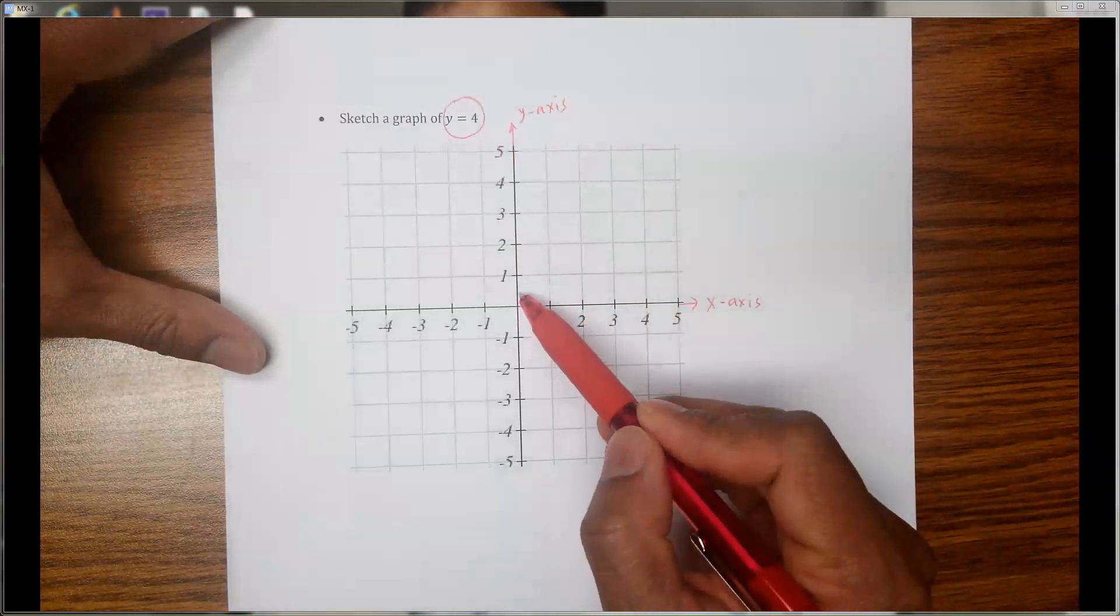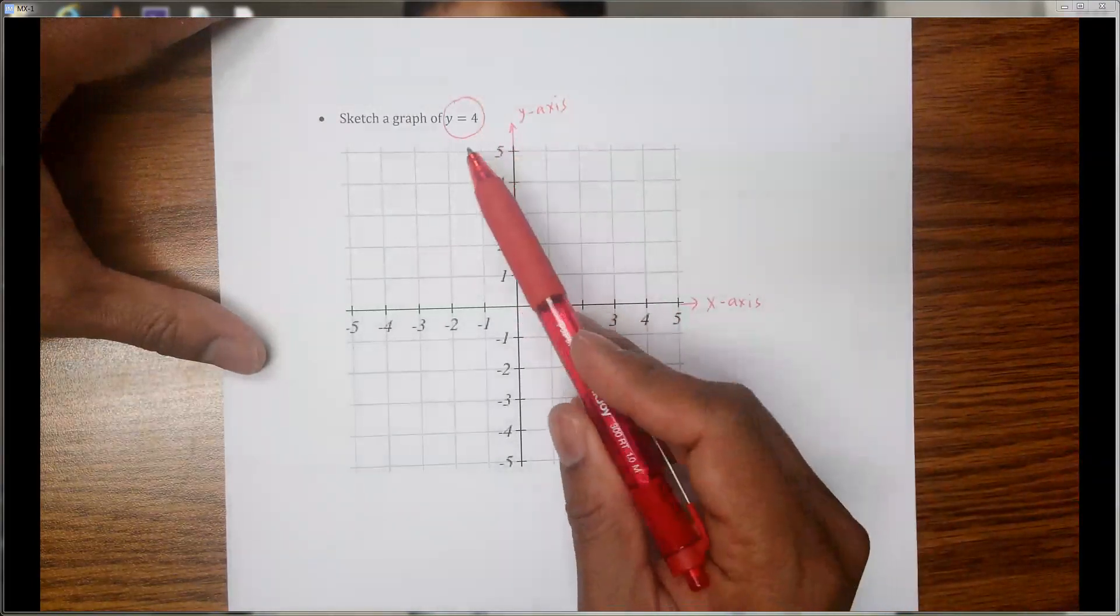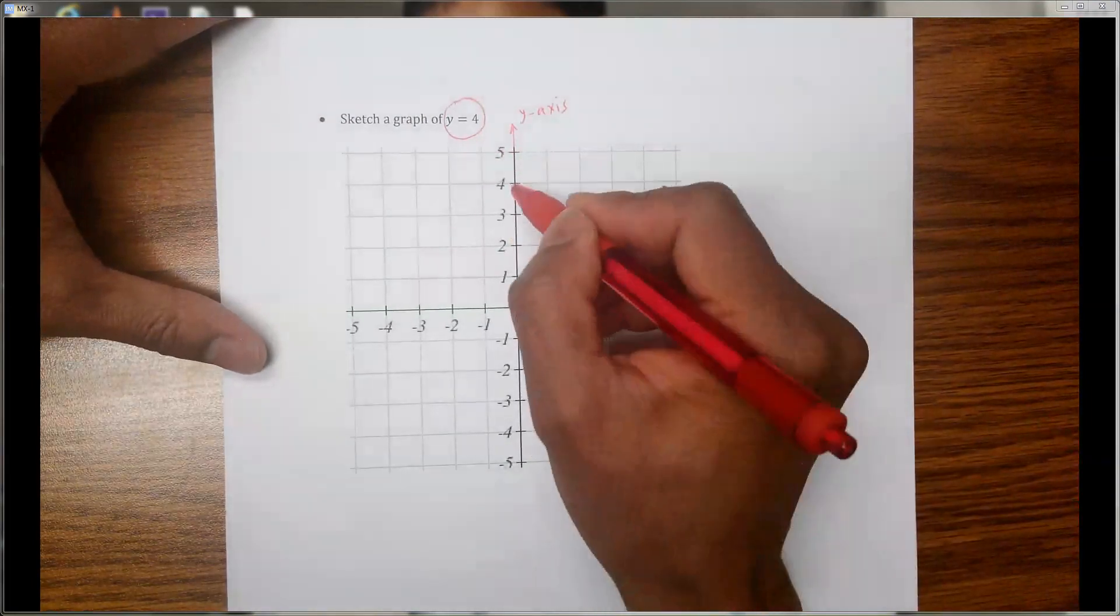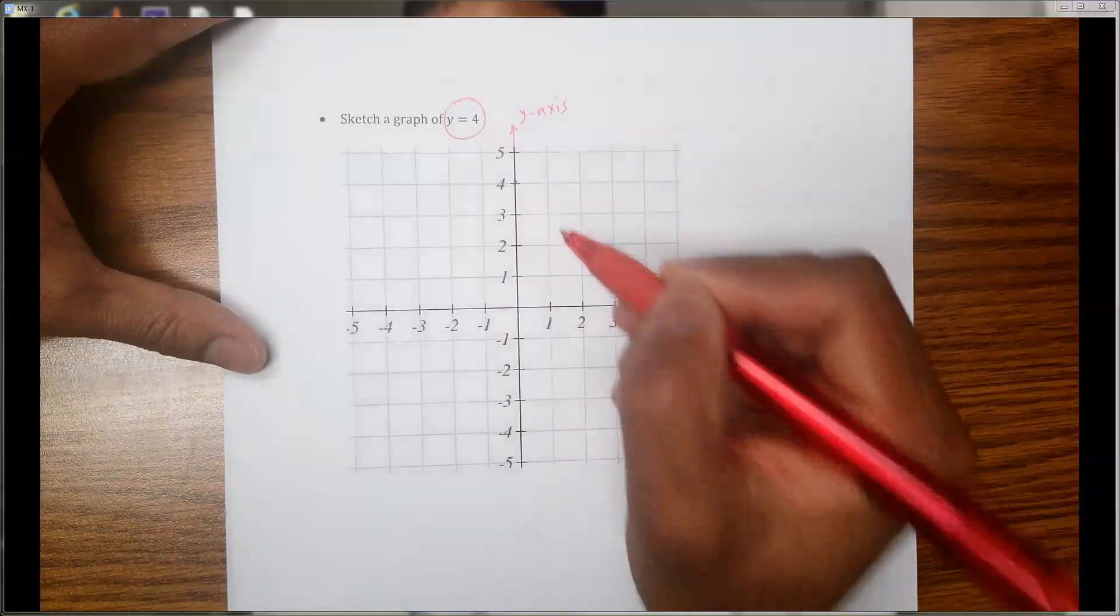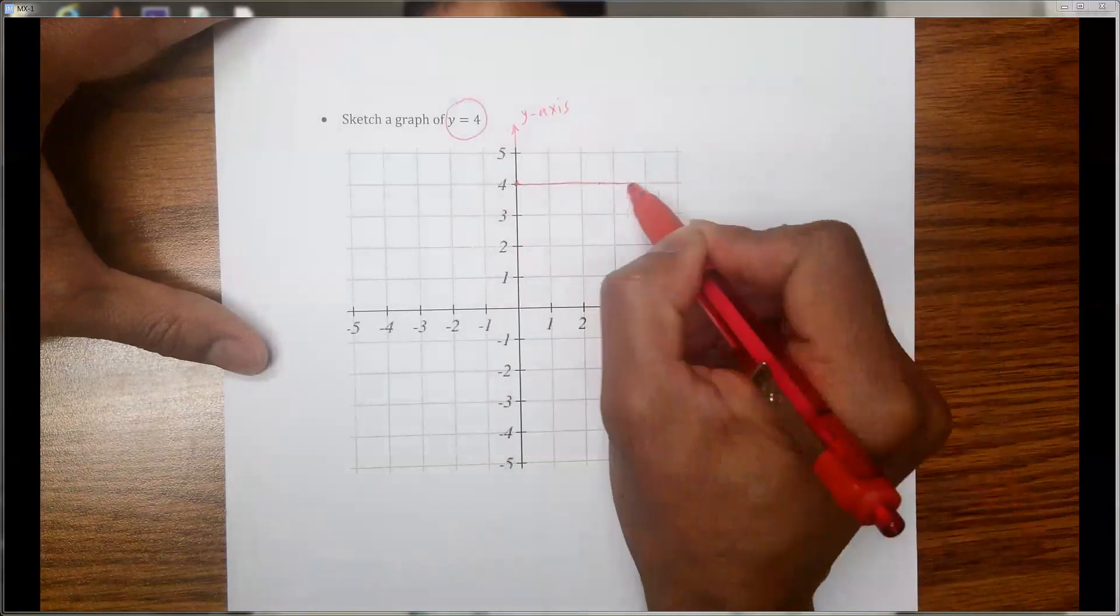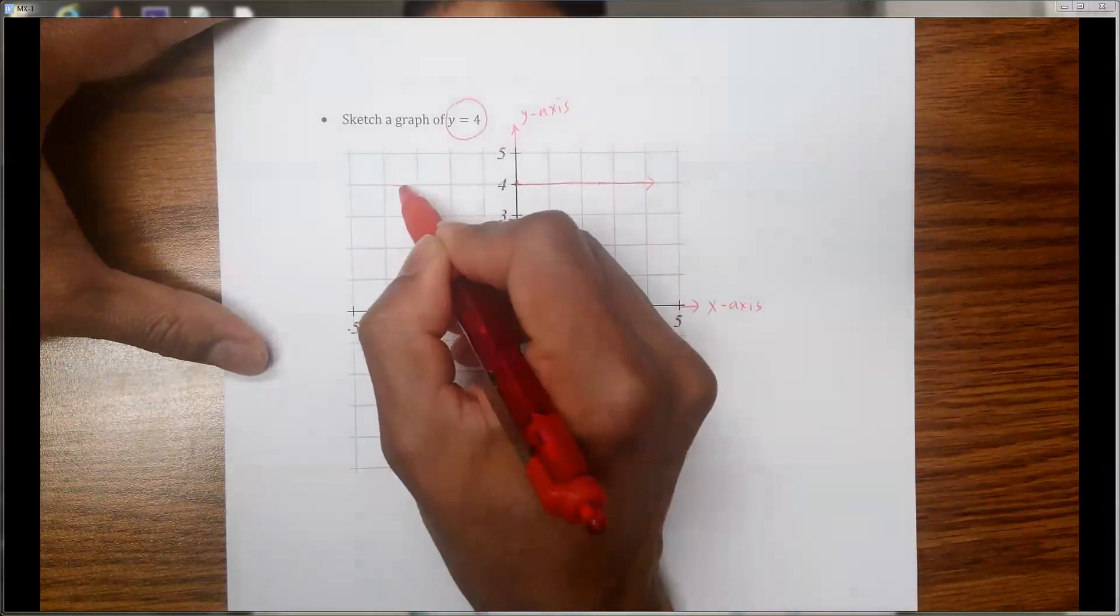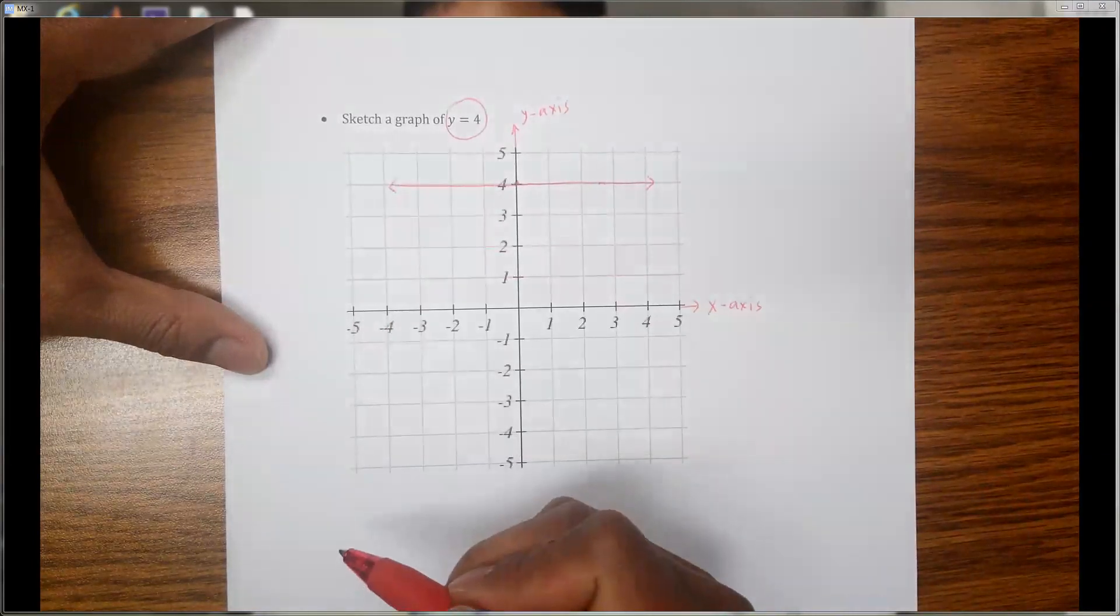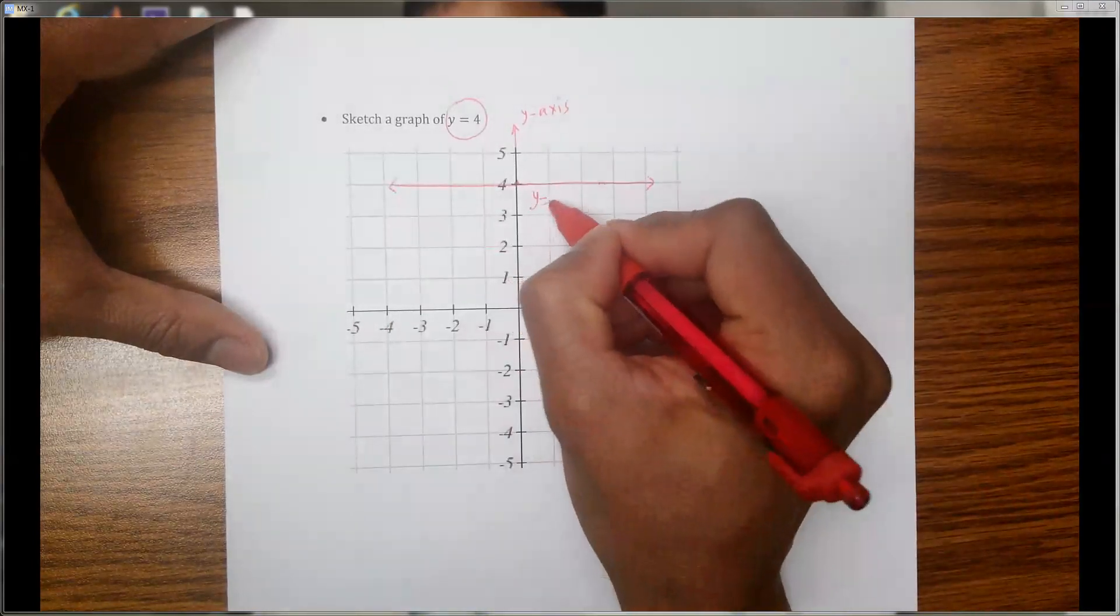Think about the horizontal line. You need to start from the origin and you have to go up because it's a positive one, two, three, four units. So you need to draw a horizontal line through that point. That means it would be a horizontal line passing through the y equal 4 value. This is the graph of y equal to 4.